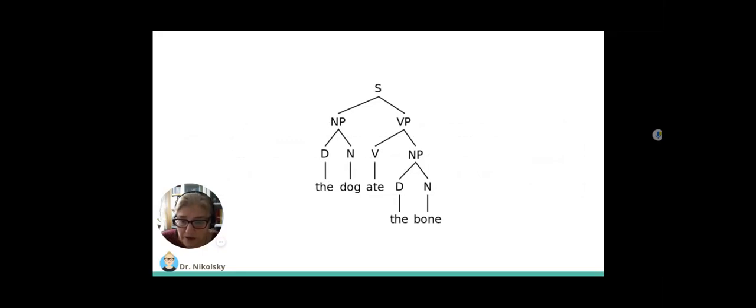The sentence S comprises of a noun phrase NP, the dog, and a verbal phrase VP, ate the bone. The noun phrase comprises of a definite article D and the noun dog. The verbal phrase comprises of a verb ate and a noun phrase NP, the bone, which has a definite article the and a noun bone.